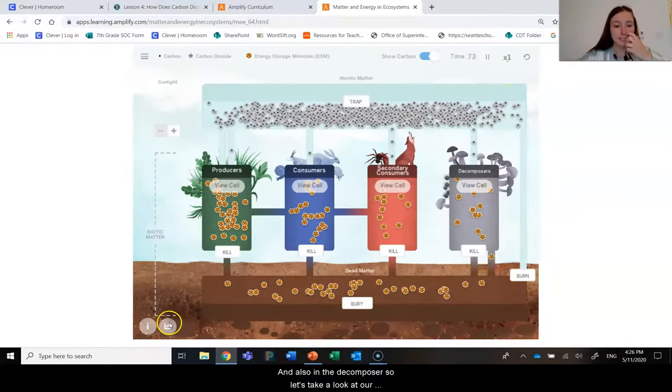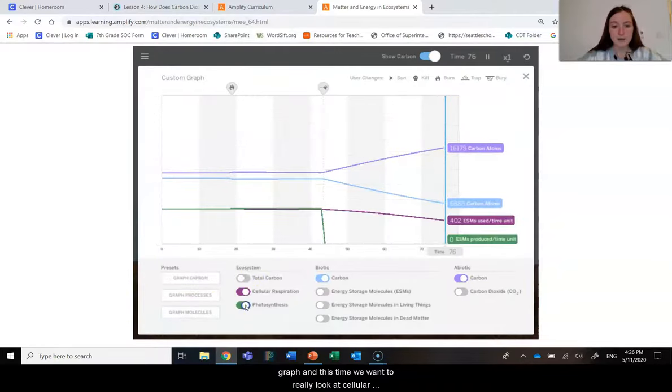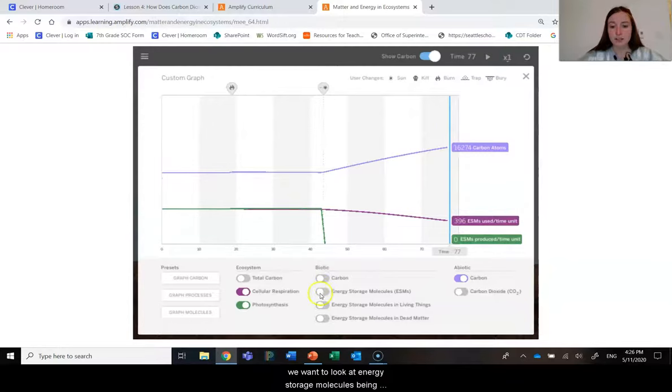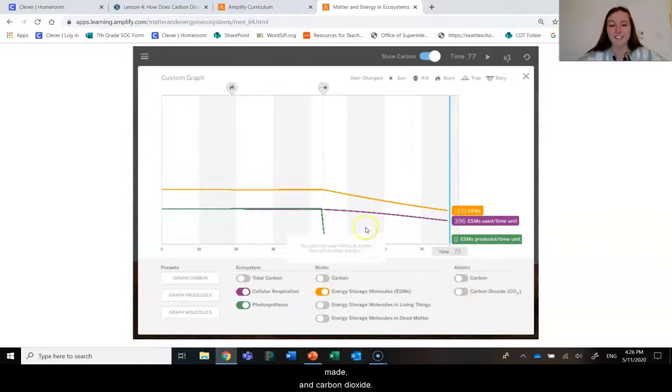So let's take a look at our graph, and this time we want to really look at cellular respiration and photosynthesis. We want to look at energy storage molecules being made and carbon dioxide.